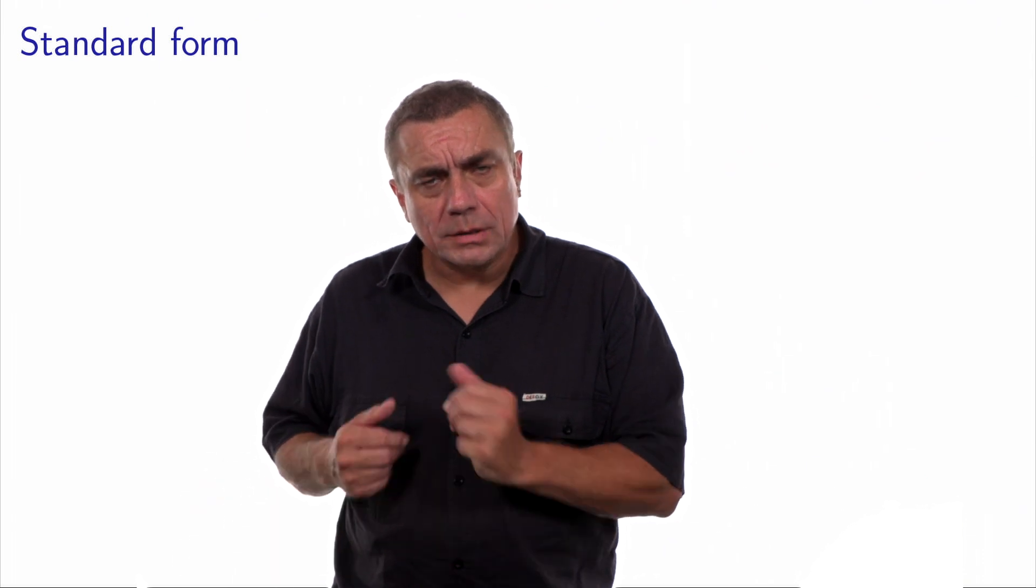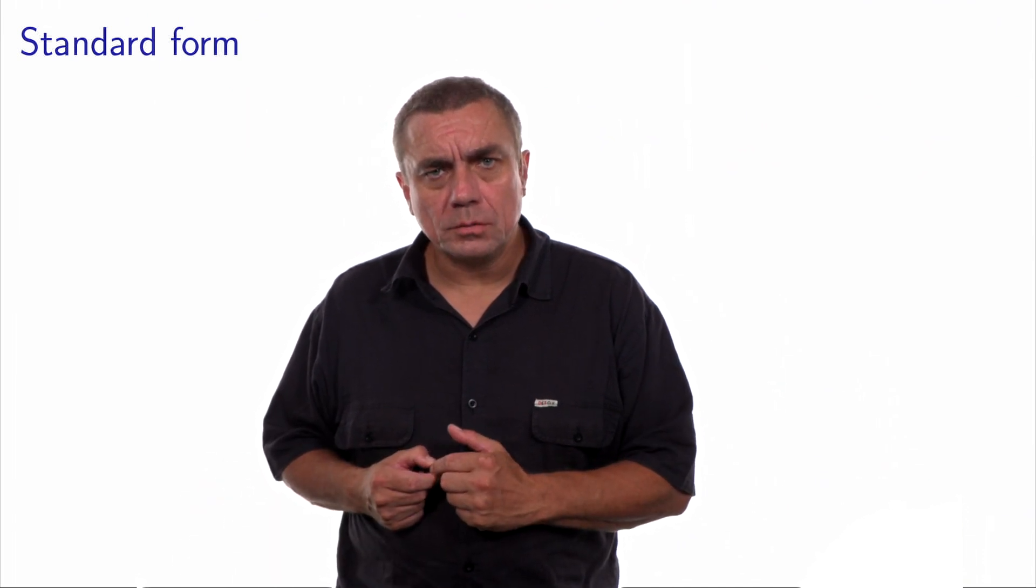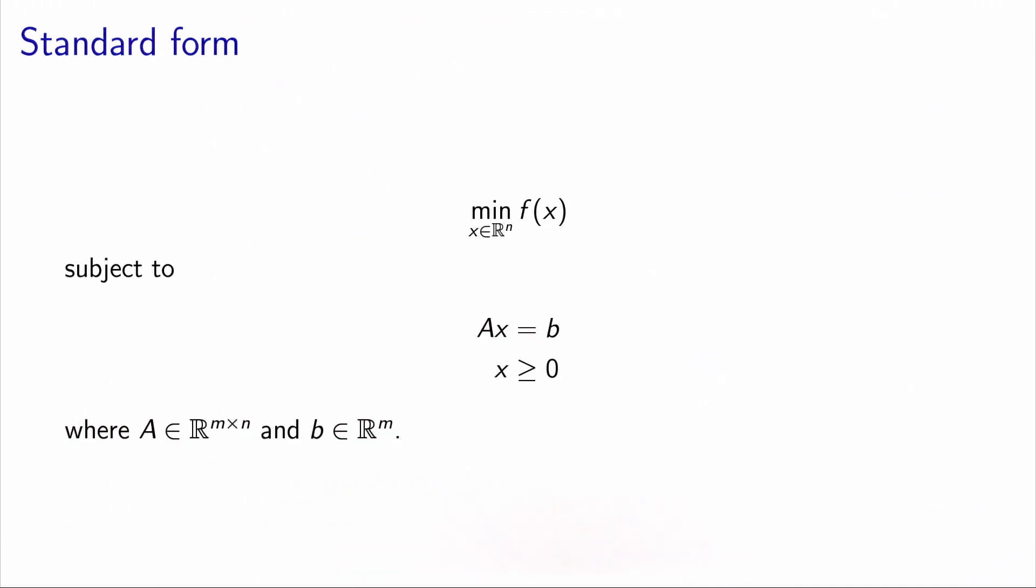Let's see what it means in terms of the specification of the problem. This is a problem in standard form. We minimize an objective function, and the constraints are defined by a set of equality constraints. We have m of them, the matrix A has m rows and n columns, and all the variables must be non-negative.